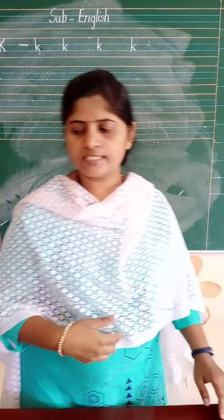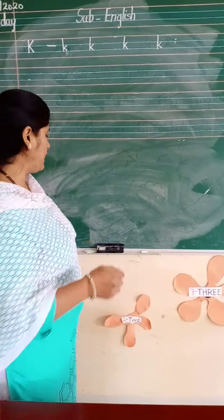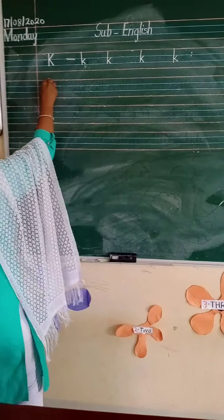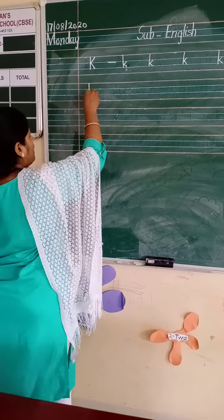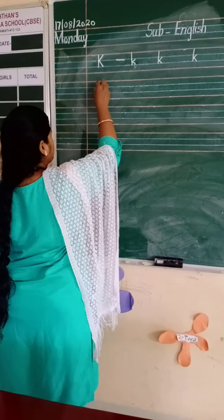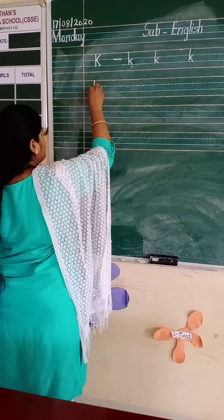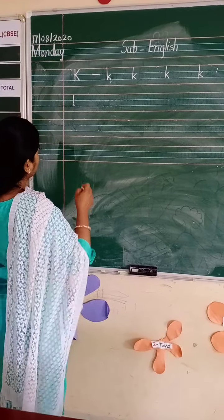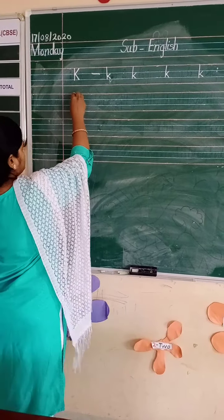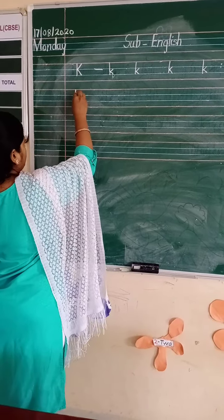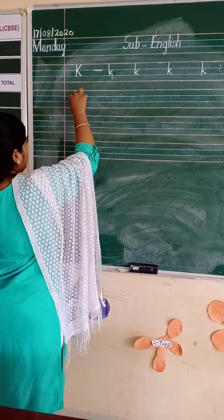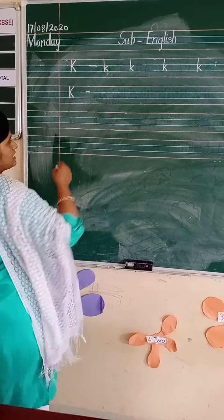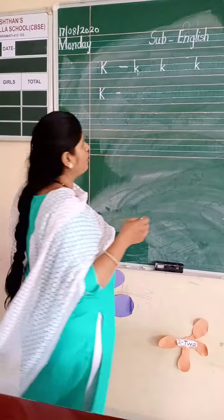Let's see how to write K. You know very well how to write capital K. We have to write in three lines — red line, blue line, blue line. Standing line, left slanting line, right slanting line.